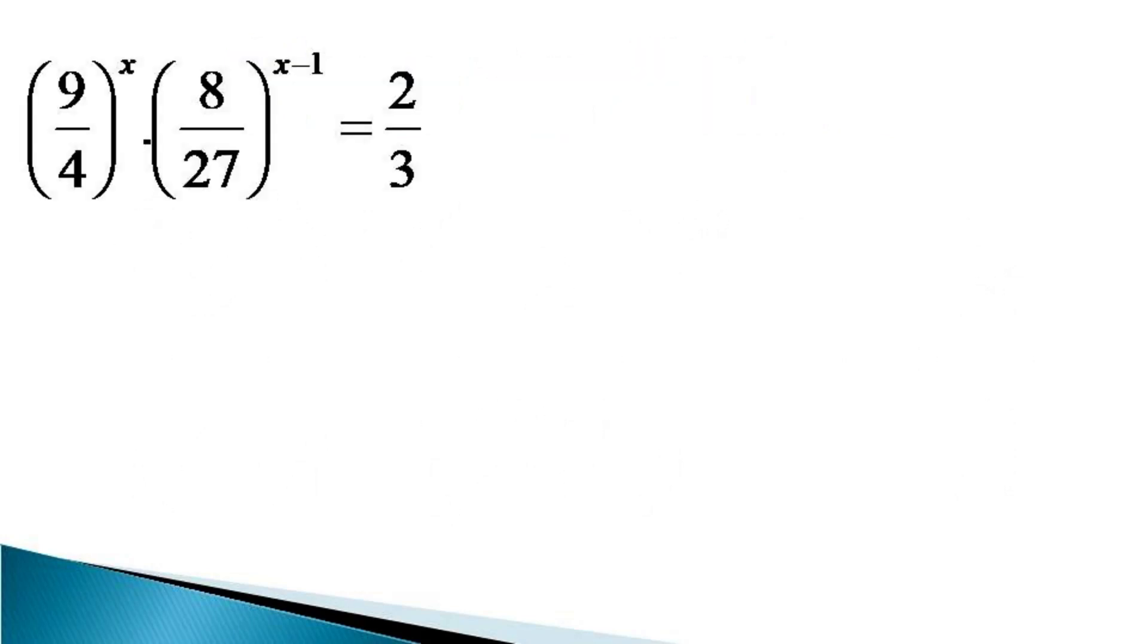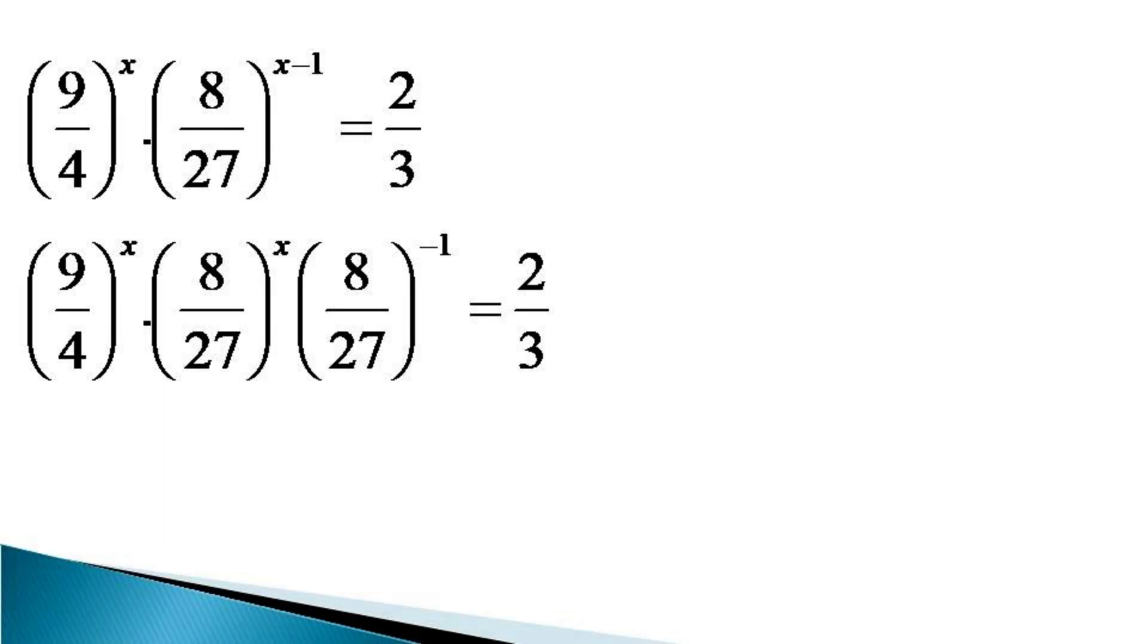To solve this equation, we notice that the second term on the left hand side can be written with the indices split as x and minus 1. The equivalent equation becomes (9/4)^x times (8/27)^x multiplied by (8/27)^(-1) equals 2/3.